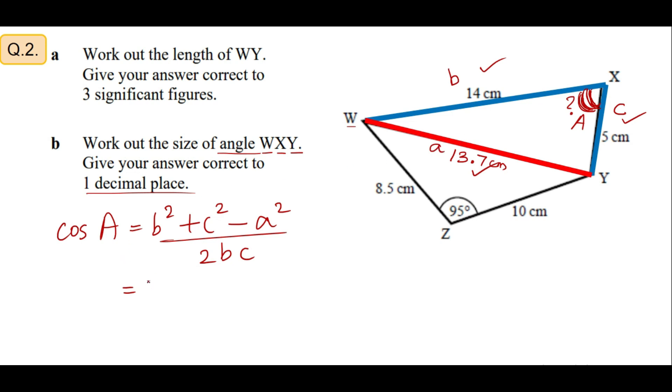So I will write cos A equals b squared plus c squared minus a squared over 2bc. So this is going to be b and c and this is my a. Substituting the values: 14 squared plus 5 squared, remember b squared plus c squared, the two arms of the angle, the missing angle, of the angle that you're going to find. And then you minus the third side which is 13.7 squared divided by twice b and c, you have b and c here 14 times 5.